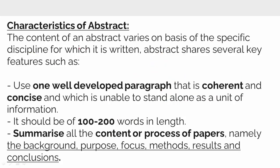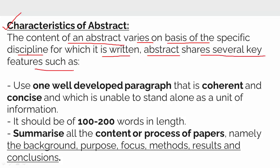Coming on to the main parts — the characteristics of the abstract. The content of an abstract varies on the basis of the specific discipline for which it is written, but abstracts share several key features common to all of them. First, it is a well-developed paragraph which is coherent and concise. Its length is about 100 to 300 words. It is a summarization of all the content or processes of the paper, which includes the background, purpose, focus, methods, results, and conclusions.